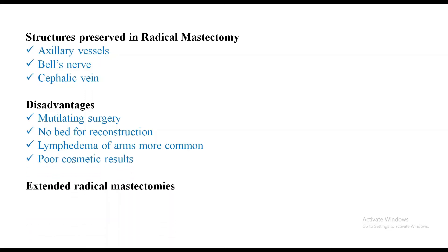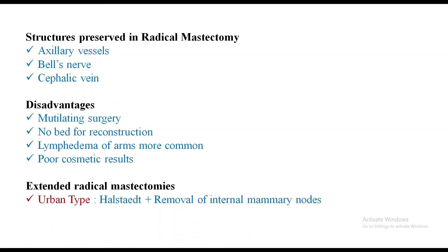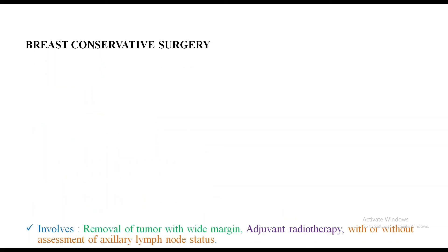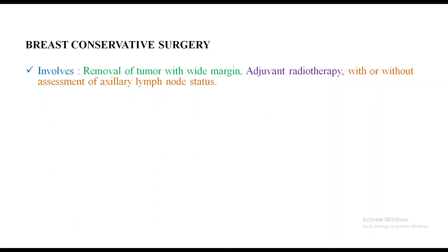Poor cosmetic results are obvious. Extended radical mastectomies: Urban type includes Halsted plus removal of internal mammary nodes. Dahlin-Avergent type is Urban plus supraclavicular node removal. Breast conservation surgery is nowadays preferred over mastectomy. It involves removal of the tumor with wide margins, adjuvant radiotherapy, with or without assessment of axillary lymph node status. DCIS, stage 1 or 2 carcinoma breast are the standard indications.